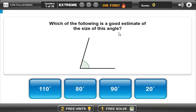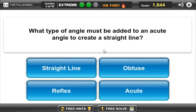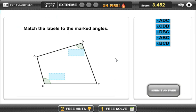Which of the following is a good estimate? I'd say it's 80 degrees. What's another good estimate? 85. What angle must be added to an acute angle to create a straight line? It's got to be an acute. A, D, C. A, B, C.